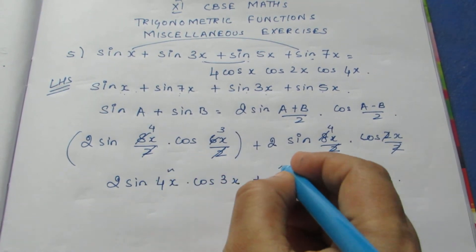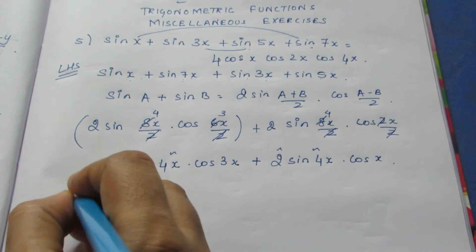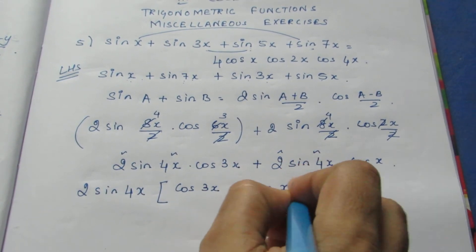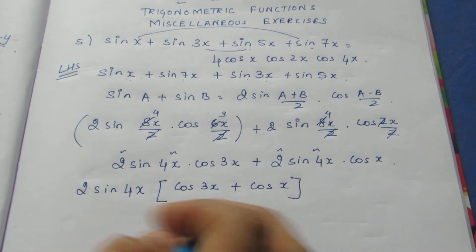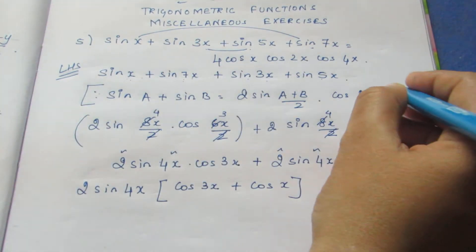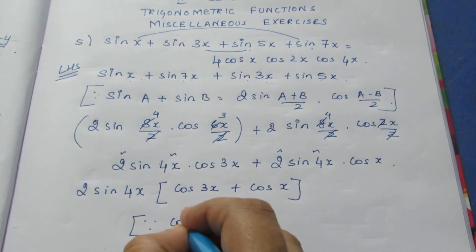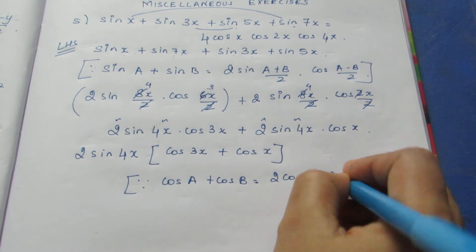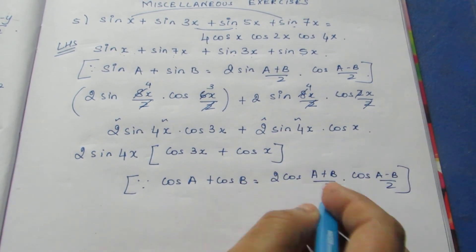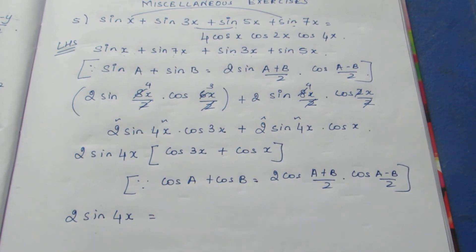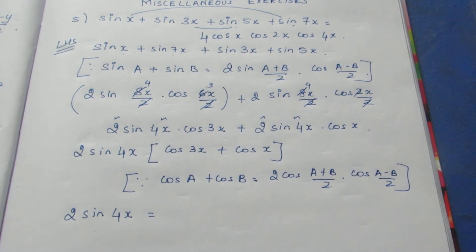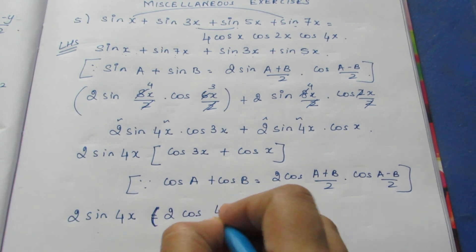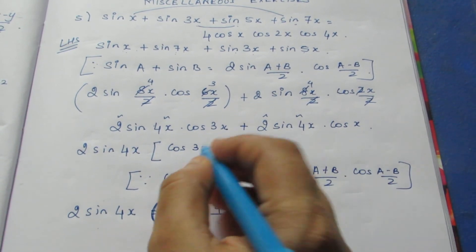Now we take 2 sin 4x common from both terms, giving 2 sin 4x · (cos 3x + cos x). We then apply the cos A + cos B formula, which equals 2 cos((A+B)/2) · cos((A-B)/2). Substituting: 2 sin 4x · 2 cos(4x/2) · cos(2x/2), which gives 2 sin 4x · 2 cos 2x · cos x.